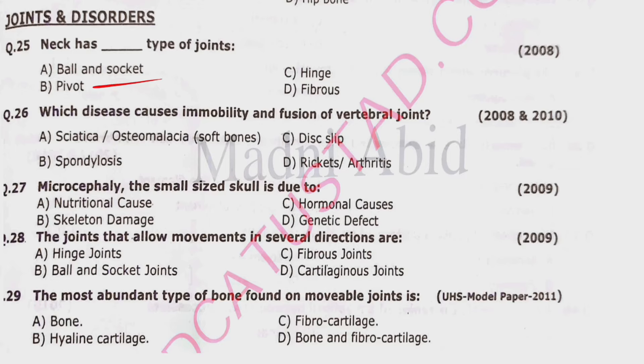Question 26: Which disease causes immobility and fusion of vertebral joints? Options: ankylosing spondylitis, osteomalacia, beta spondylosis, disc slip, or rickets and arthritis. The correct option is beta — spondylosis.